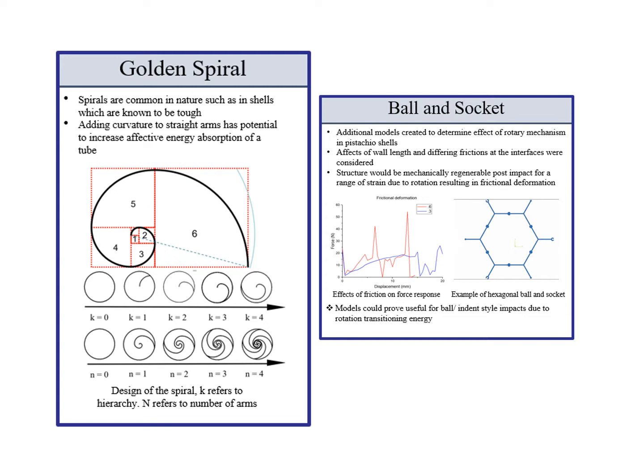The golden spiral consists of a tube with arms in the golden spiral shape. K refers to the hierarchy of the arms and N refers to the total number of arms.